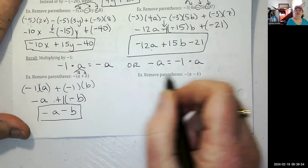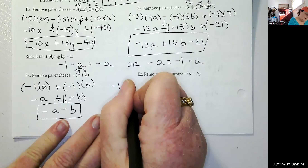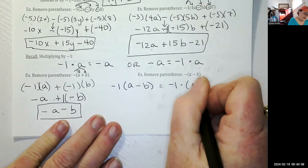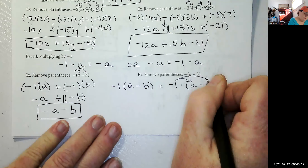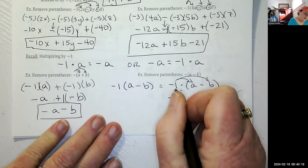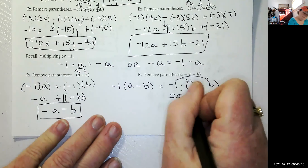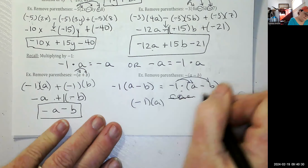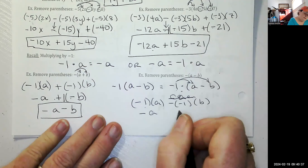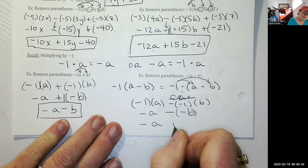Pause and try this one. For negative times the quantity A minus B: that's negative one times A minus negative one times B. One times A is A, signs different so negative A. One times B is B, signs different gives a minus sign — but cleaning up, minus negative B: negative times a negative is positive B. Answer: negative A plus B.